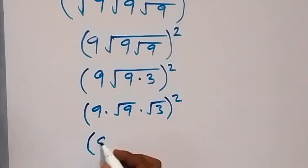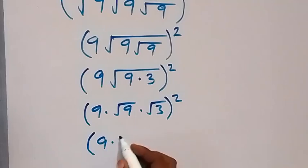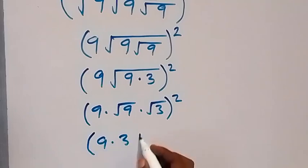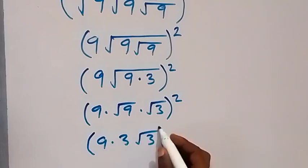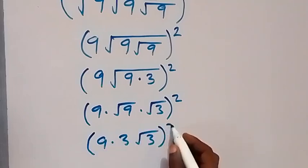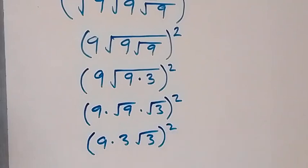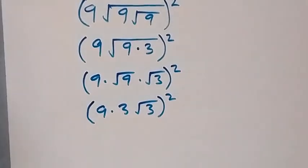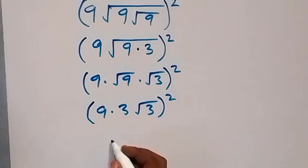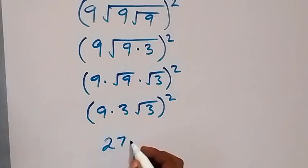Then root of 9 times root 3, then raise to power 2. From here root 9 is 3, so we have 9 times 3, then root 3 times root 3, raise to power 2. And 9 times 3 gives us 27, and that gives us 27 times root 3.